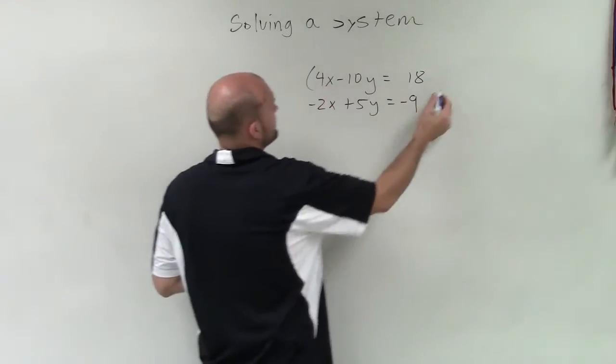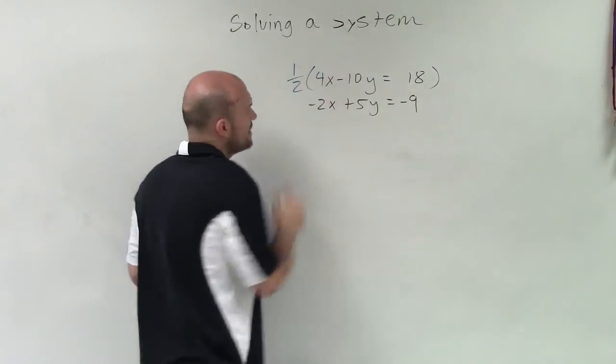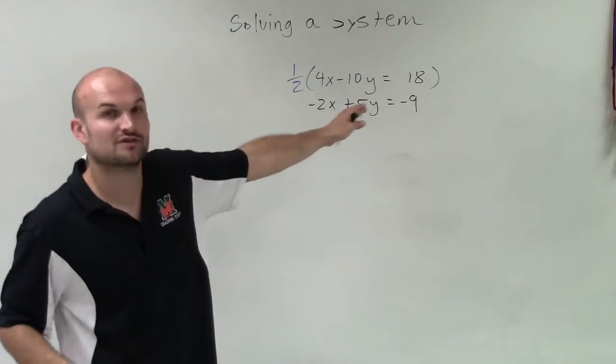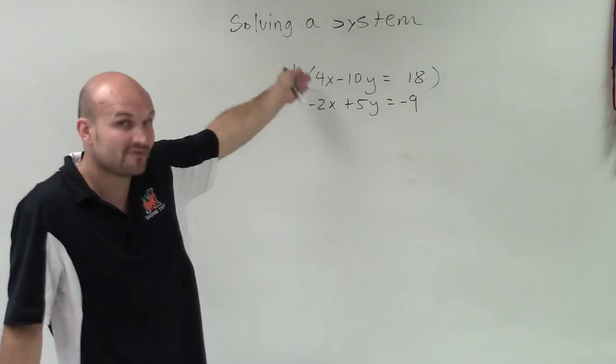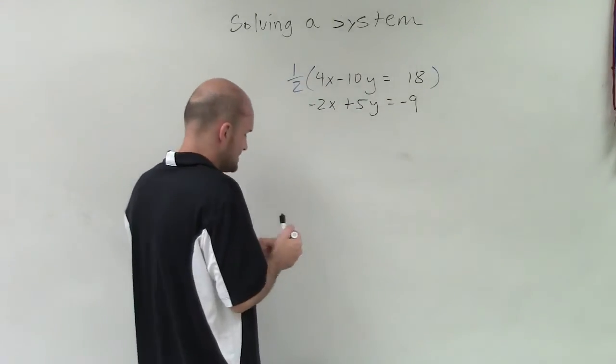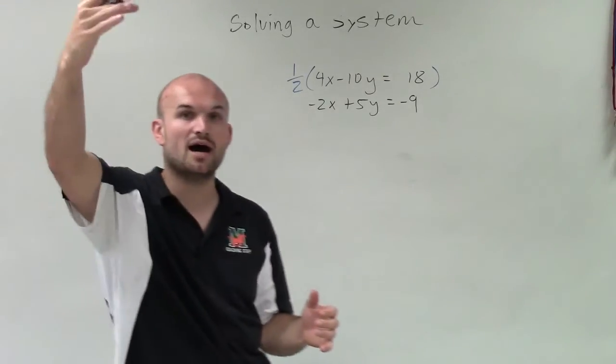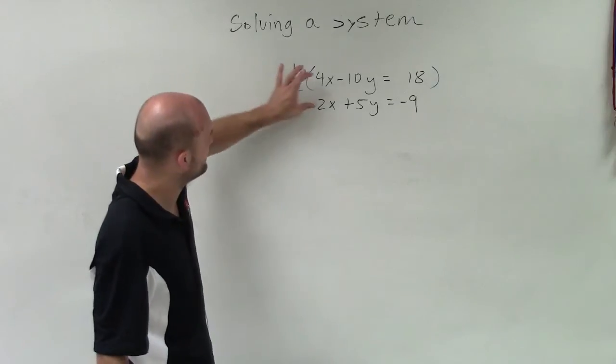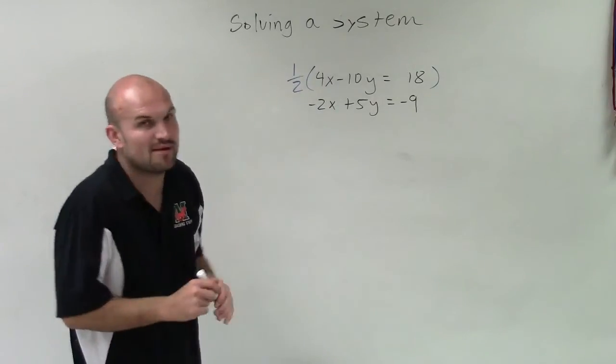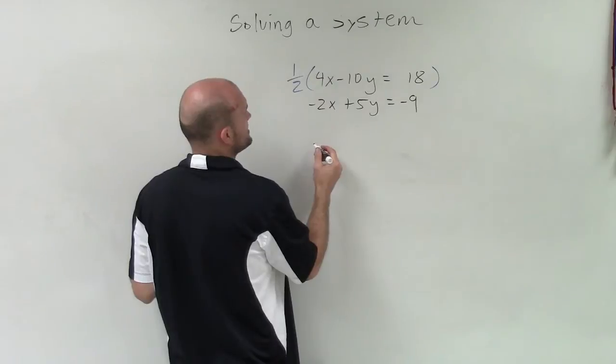So I'm actually going to multiply by 1 half, just so you guys can see you don't have to always multiply by 2. You can also multiply by a fraction and you're still going to get the exact same solution. But a lot of times everybody wants to multiply up. Well, if 4 is your common multiple, we can multiply by 1 half and that would probably make it a little bit simpler.